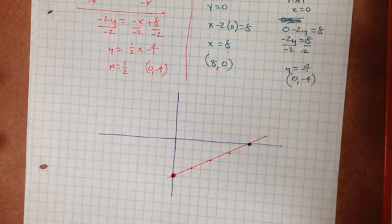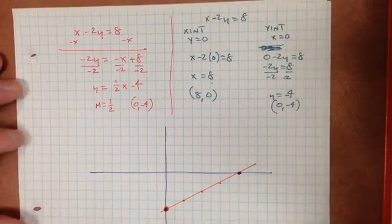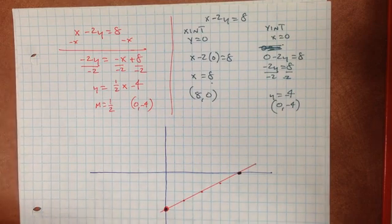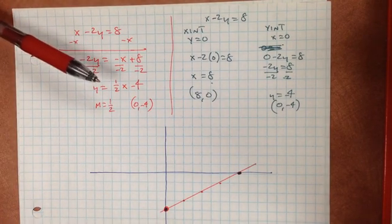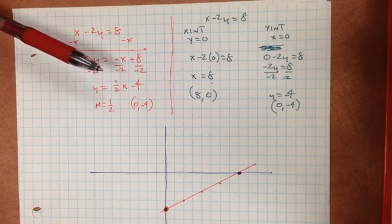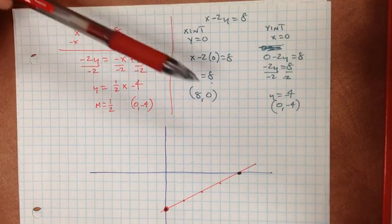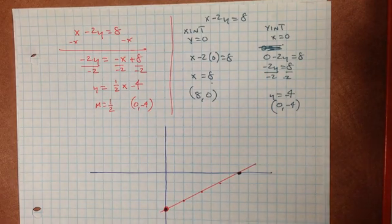Hope that helps. You now have some options for graphing a line when it is in standard form. If you would like to change it to slope-intercept form, feel free. Some people love to find the two intercepts because making the value 0 makes it pretty easy to deal with. Thank you very much.